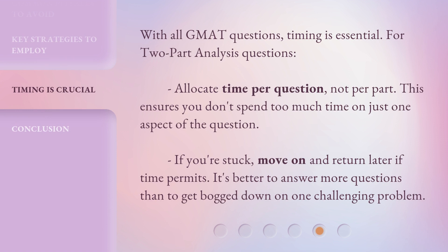With all GMAT questions, timing is essential. For two-part analysis questions, allocate time per question, not per part. This ensures you don't spend too much time on just one aspect of the question. If you're stuck, move on and return later if time permits. It's better to answer more questions than to get bogged down on one challenging problem.